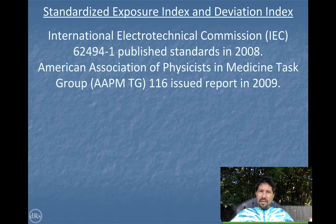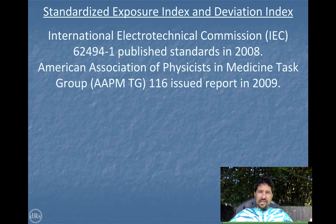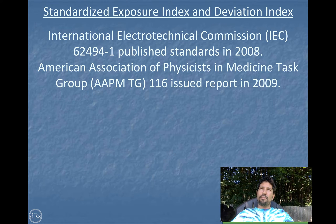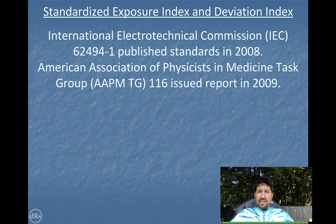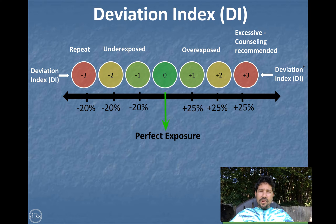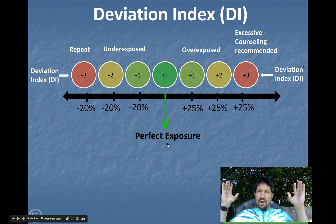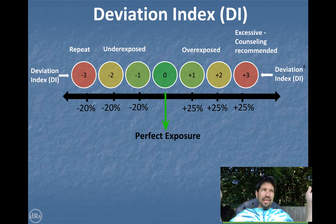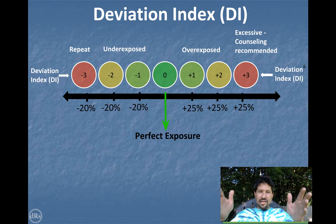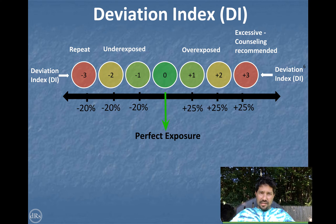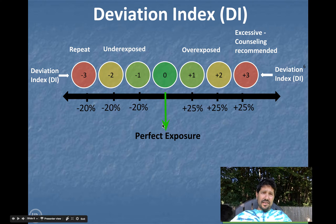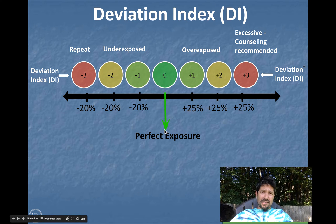The AAPM physicists all got together and came up with the standard, and slowly vendors are adapting to it. You might have a new system that has your old indicator and your new indicator present. So here's the new indicator: if you get a perfect exposure and achieve your nominal — so your S number is 200 or your log median is 2.5, whatever it is, it's the ideal exposure — that would get stamped with a deviation index of zero.